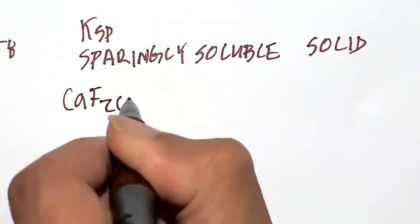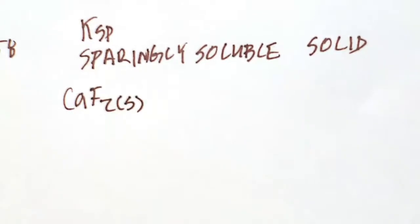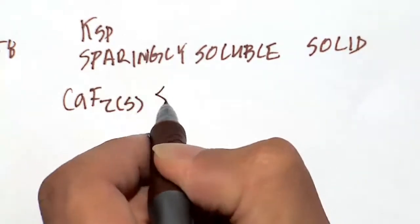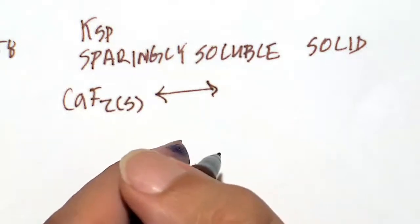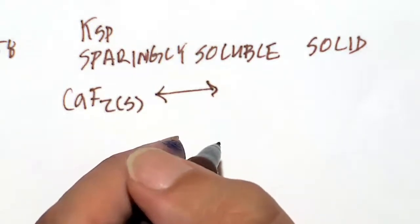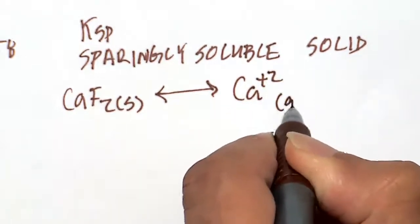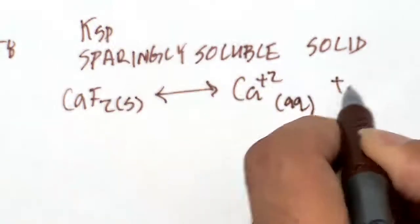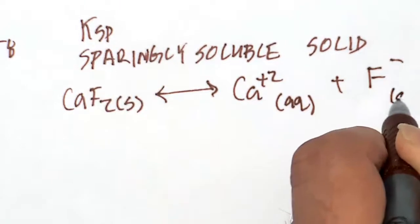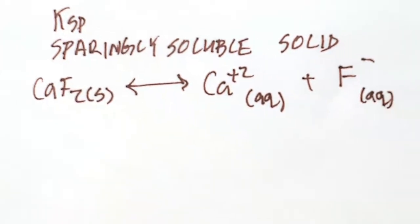The first thing we have to do is write our Ksp equation. This is fundamental and the most important part in solving these equations properly. So calcium fluoride is in an equilibrium, that back-and-forth arrow with its ions, the calcium ion in solution, and the fluoride ion in solution. Don't forget to balance this equation.